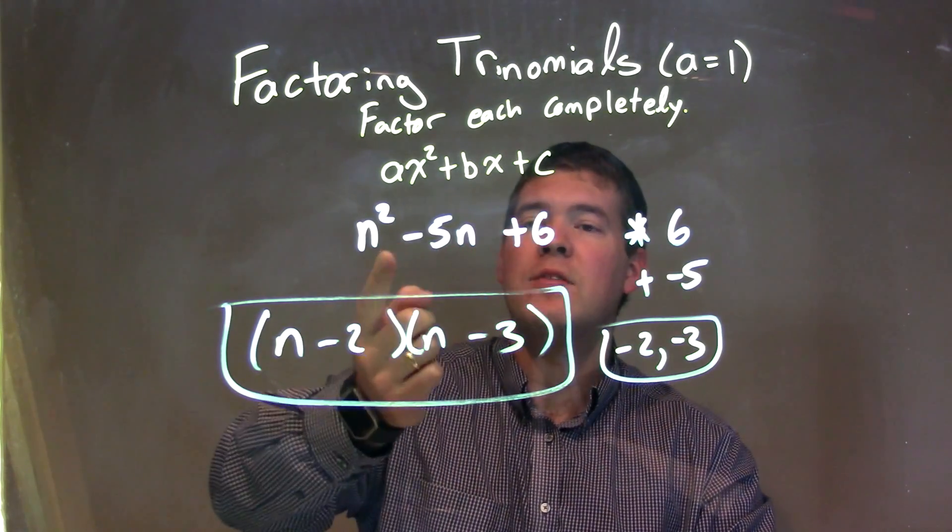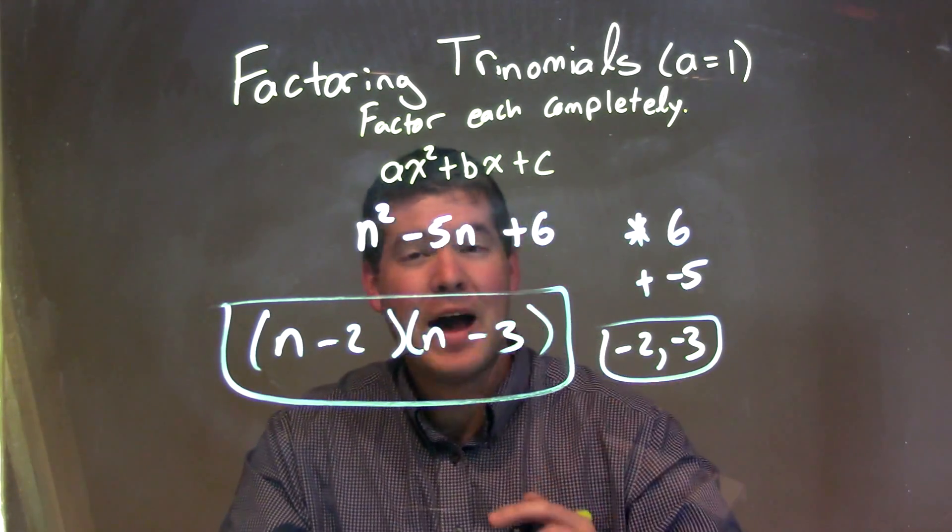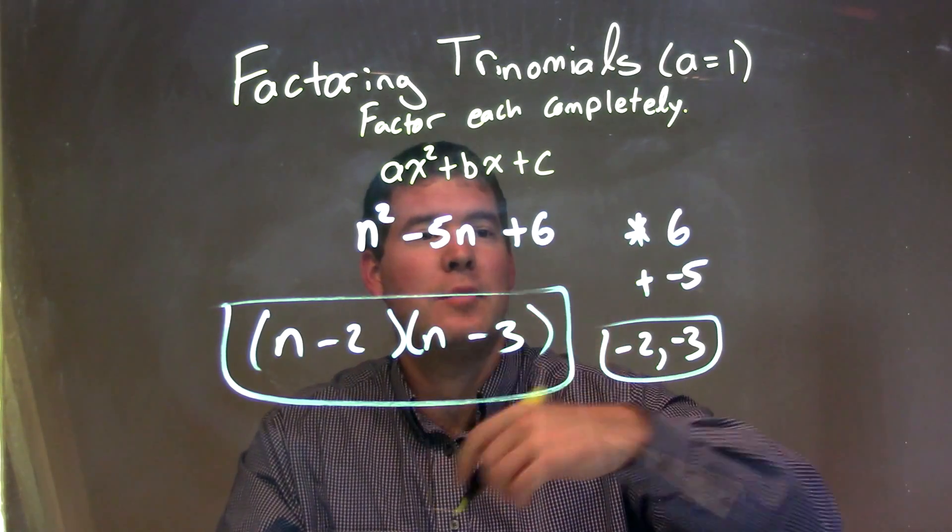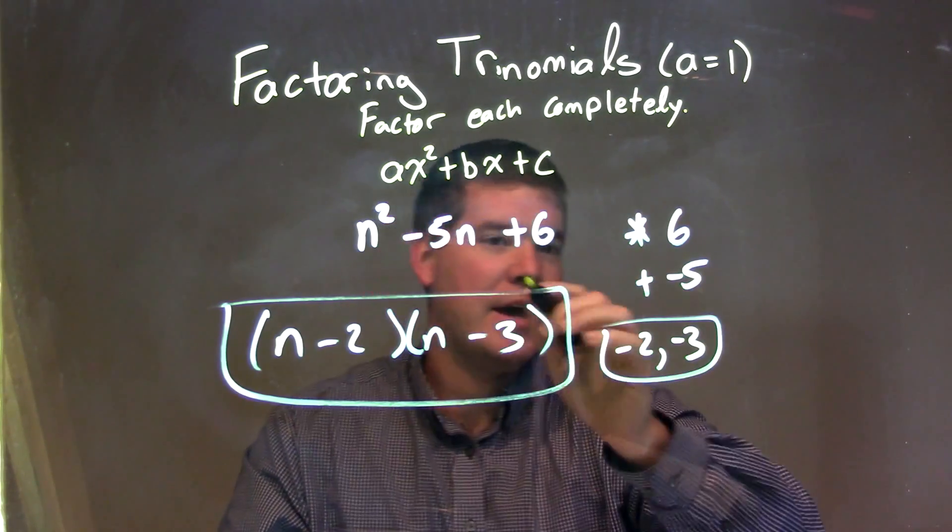So as we're given n squared minus 5n plus 6, and we need to factor that, we ask ourselves the question of what two numbers multiply to 6 and add to be negative 5.